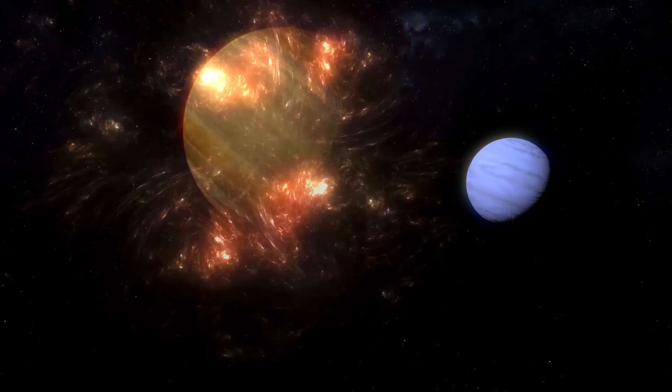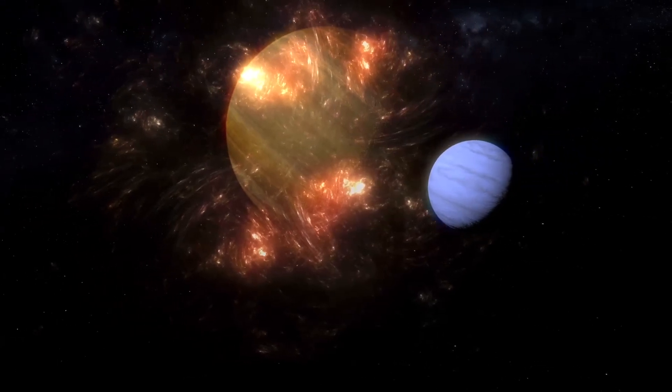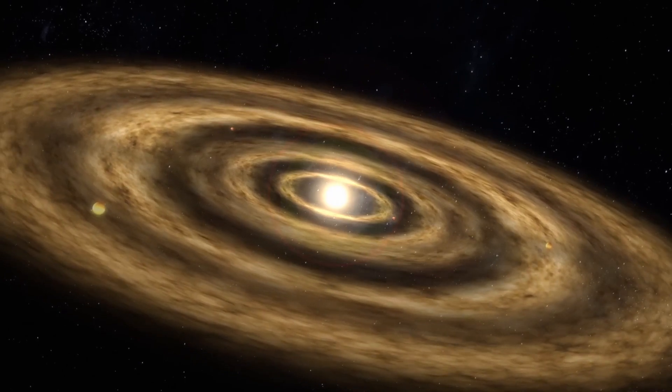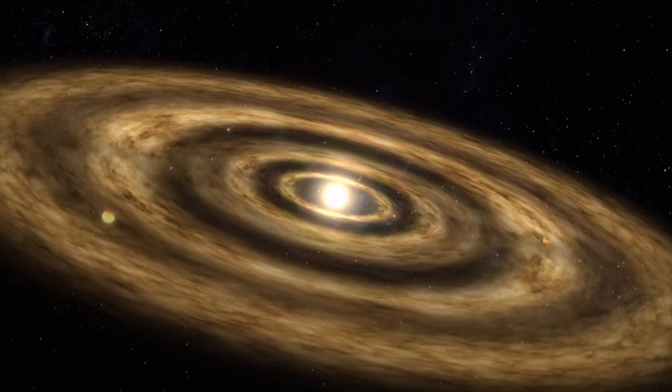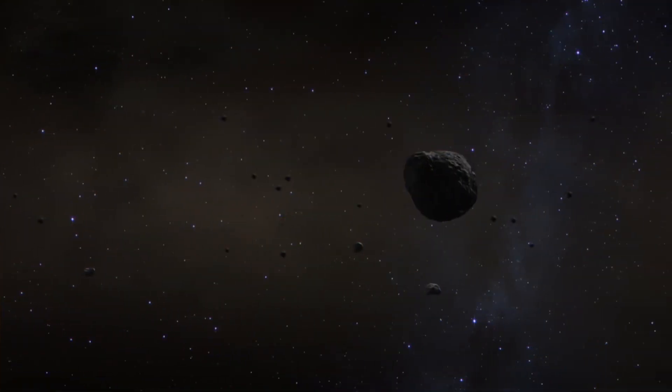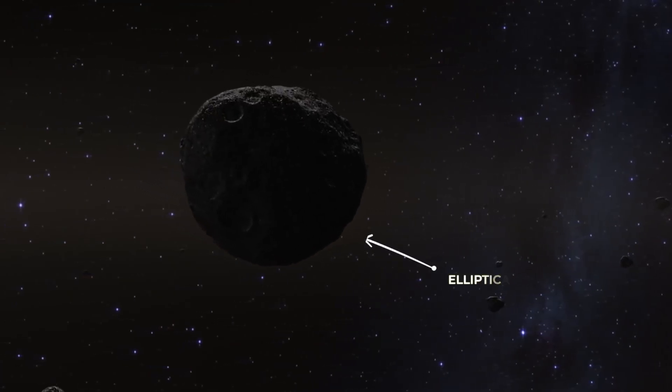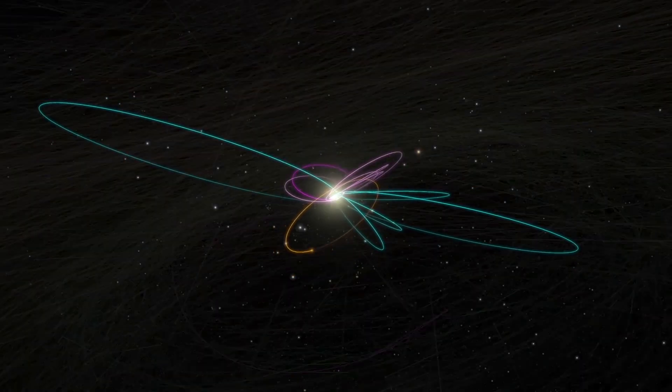Some of the team working with the TNOs have theorized that these objects may be the remnants of the formation of our solar system billions of years ago, while others may be more recent additions. They range wildly in their sizes, but all seem to be round or elliptical in shape. Likewise, their orbits vary wildly,